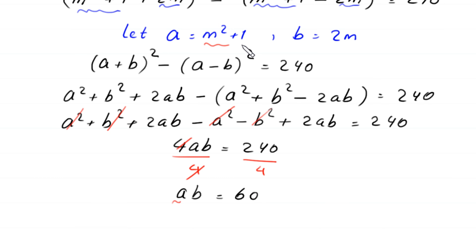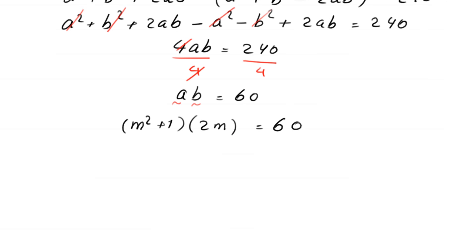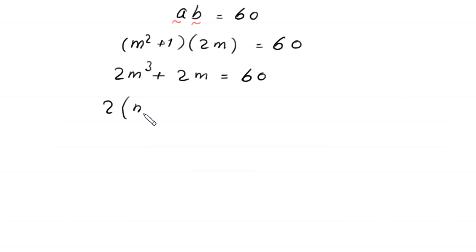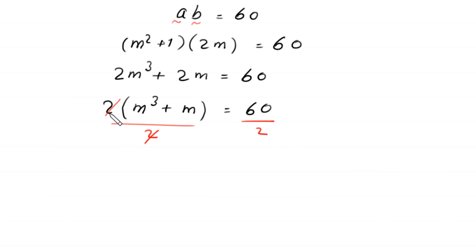Now we replace a with m^2 + 1 and b with 2m. This equation becomes (m^2 + 1)(2m) = 60. Multiplying out: 2m^3 + 2m = 60. Factoring out 2: 2(m^3 + m) = 60. Dividing both sides by 2: m^3 + m = 30.